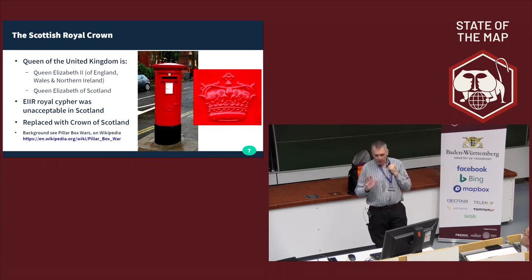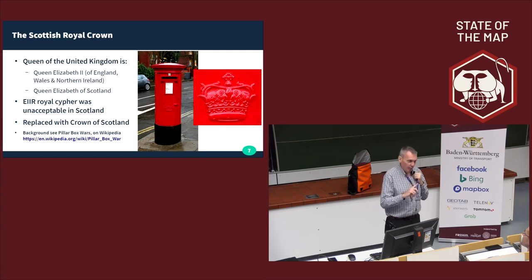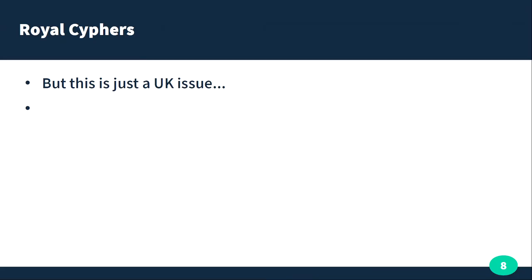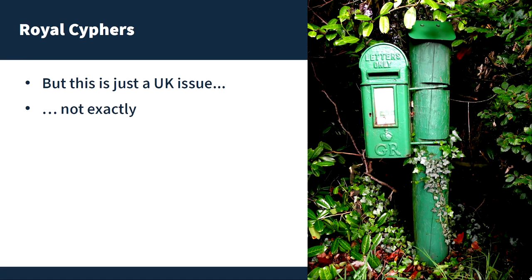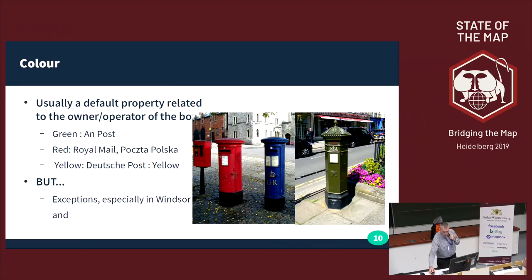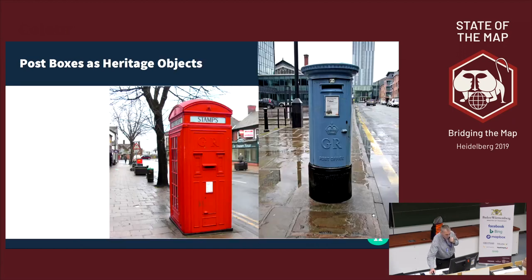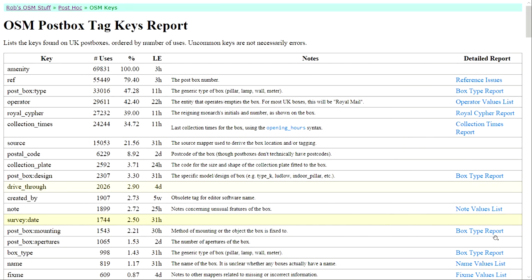In a typical British compromise, they introduced the Scottish crown — which you'll notice is different from the imperial crown on the previous one — onto the post box. Is it just a British issue? No. Here's an Irish post box with a royal cipher. We also have colour — they come in lots of different colours, and these are all in Windsor. We have gold post boxes associated with Olympians and Paralympians, and post boxes which are listed buildings. This is the complete range of tags on post boxes, including the UK ones on Robert Whittaker's post oxide.